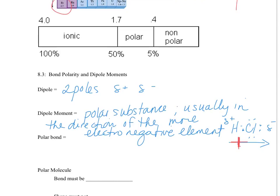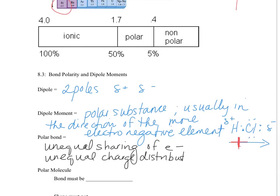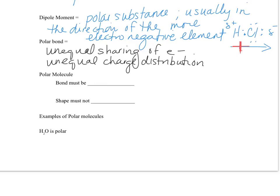A polar bond is characterized by unequal sharing of electrons or an unequal charge distribution. A polar molecule, the bond must be polar. The shape must not cancel out. Therefore, it is asymmetrical.